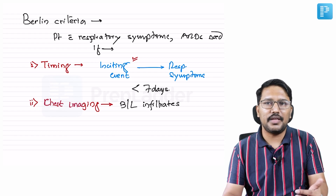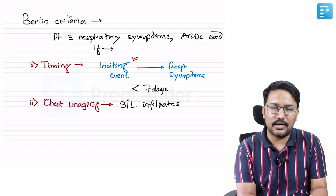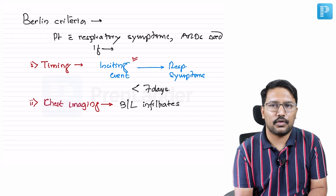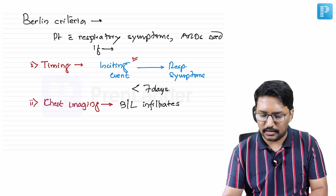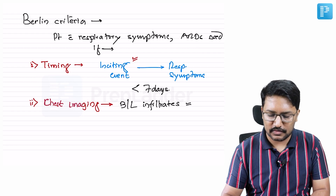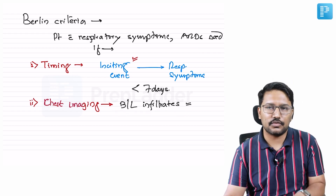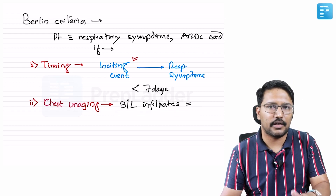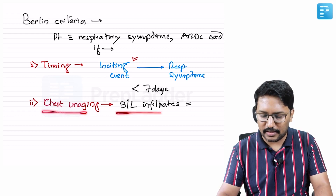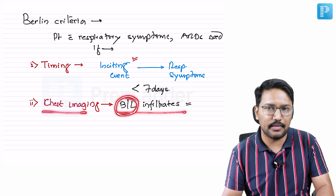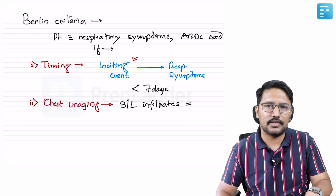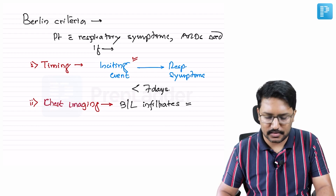These infiltrates should not be explainable by the presence of consolidation, nodules, or pleural effusion. Most of us do not get confused at this point — the only differential diagnosis for this kind of X-ray picture would be pulmonary edema caused by cardiogenic causes. So bilateral infiltrates on chest imaging are required, and bilaterality is very important — you cannot consider ARDS when there are unilateral infiltrates.